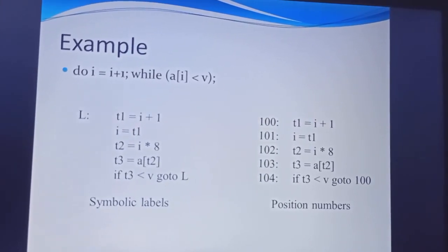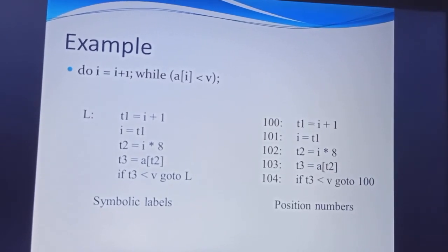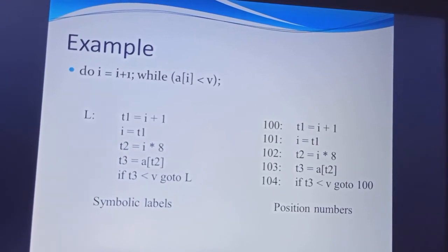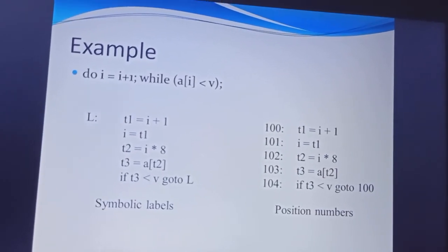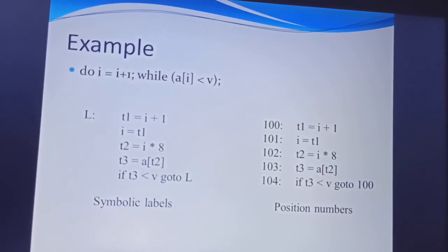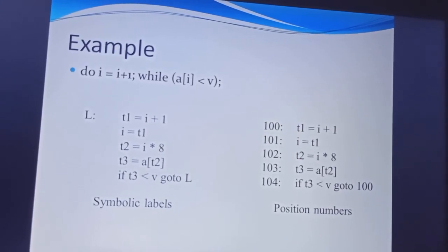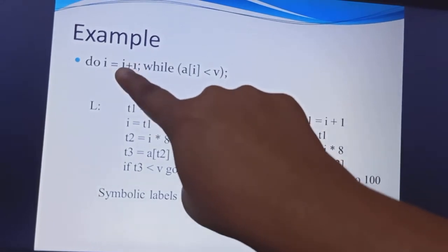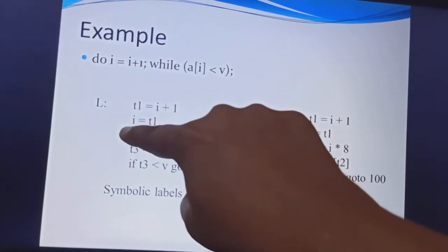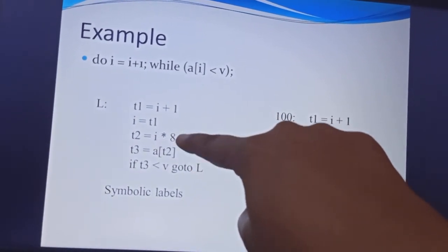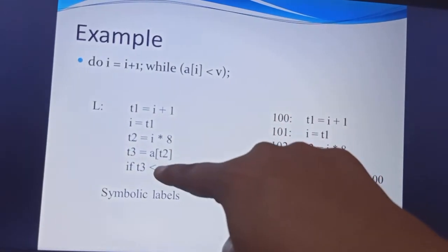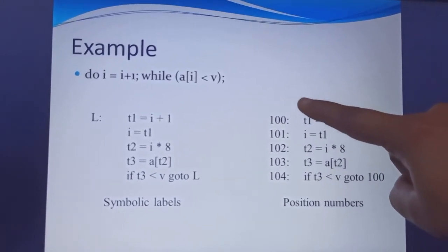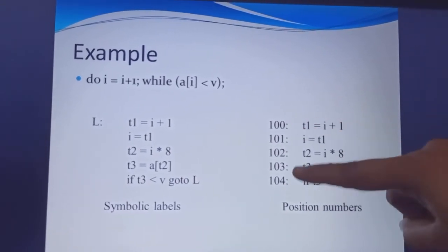For the do-while example: do { I = I + 1 } while (A[I] <= V), the 3-address code is: T1 = I + 1; I = T1; then computations check the while condition. If true, it jumps to the label. The numbers indicate the memory location or index at which values are stored.